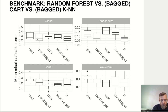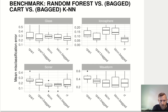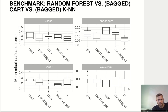Now comparing bagged trees to random forest, which additionally decorrelates the ensemble by random feature subsampling, we see another systematic improvement. Sometimes it's more clear than in other cases, but the random forest is at least as good in terms of the median, and it usually has a lower median or a lower maximum. So decorrelating these trees seems to help as well.